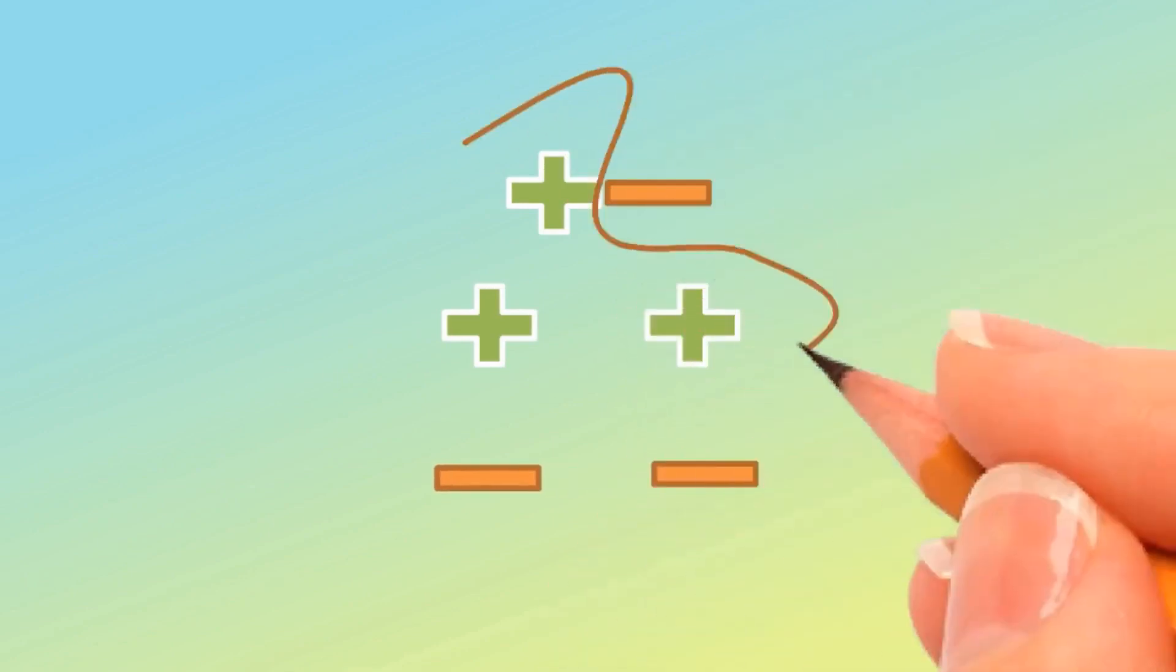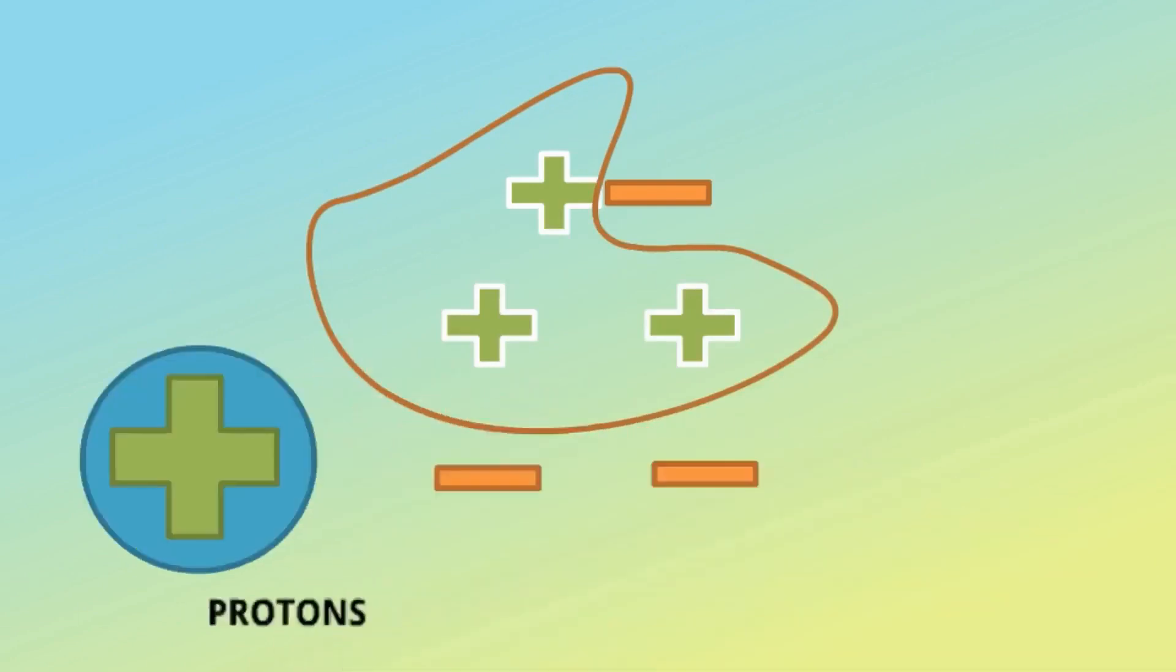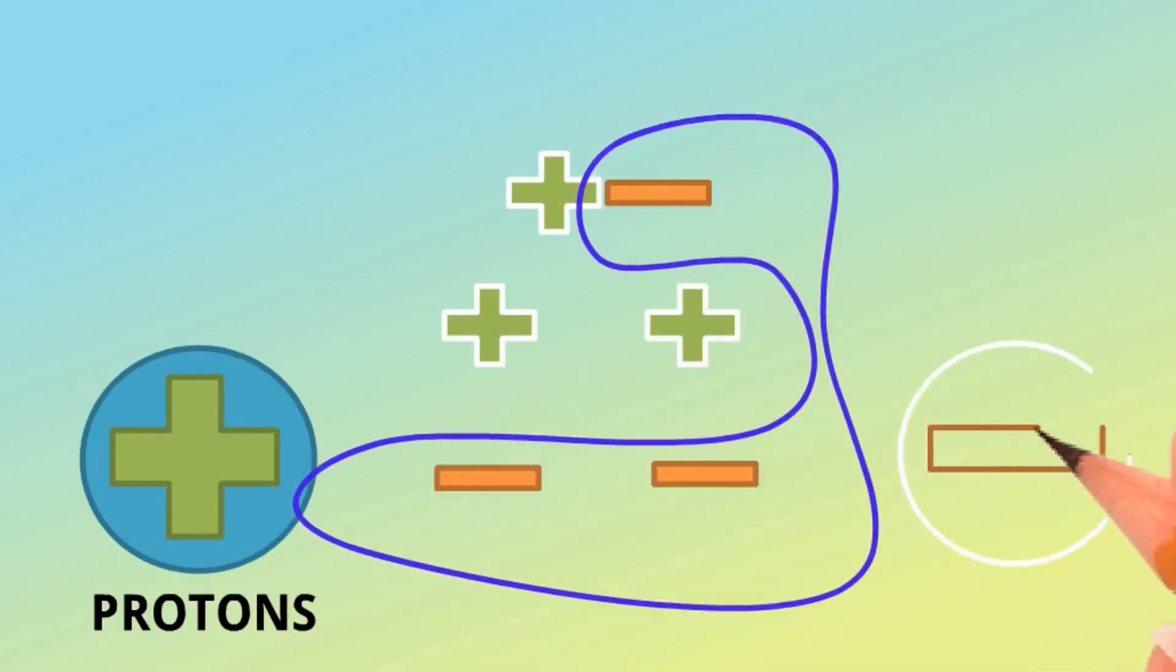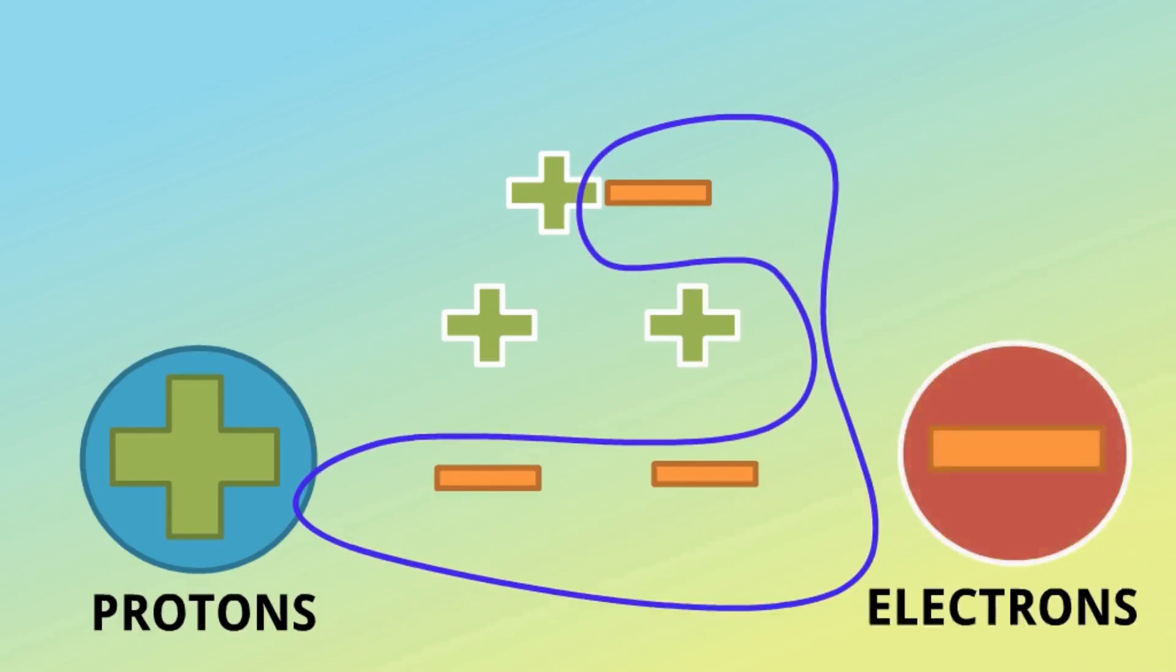All positive charge is carried by a very minute particle called a proton. All negative charge is also carried by a very minute particle called an electron.